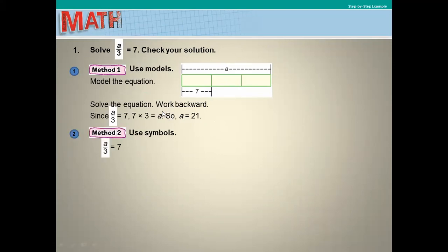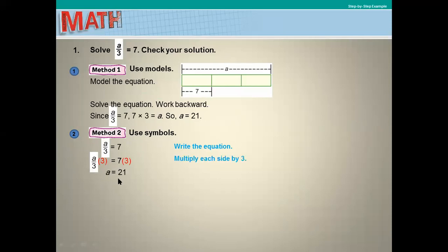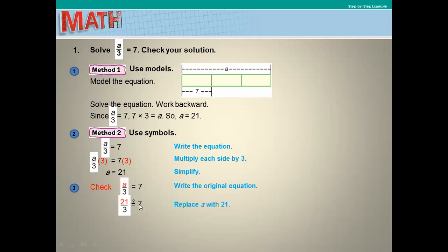To solve algebraically: a over 3 equals 7. Multiply both sides by 3 because the opposite of division is multiplication. The 3s cancel on the left, leaving a. So a equals 7 times 3, which is 21. To check, replace a with 21: 21 over 3 equals 7 — the two values are equal, so the sentence is true.